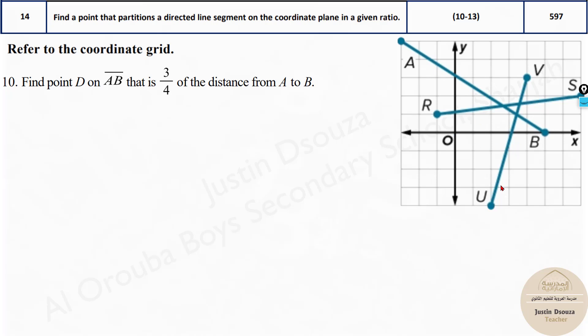Here we can see there are lines and we need to find point D on line AB. This is line AB that is three-fourths the distance from A to B. Three-fourths means it's nearly close towards B, somewhere over here. How do we find that?